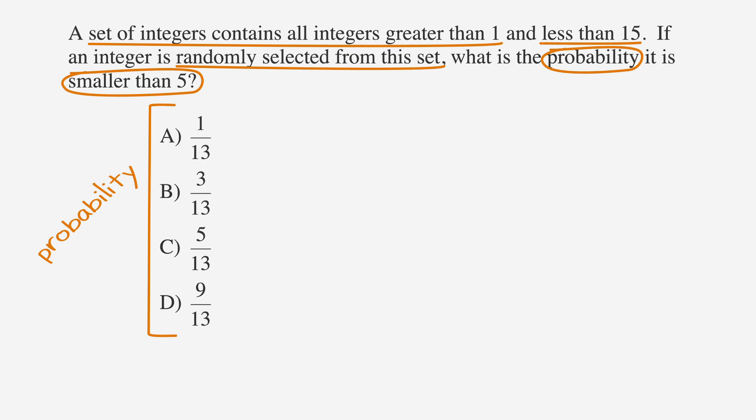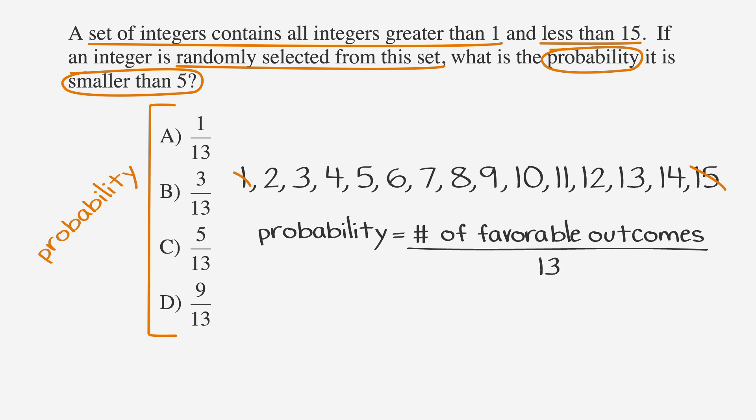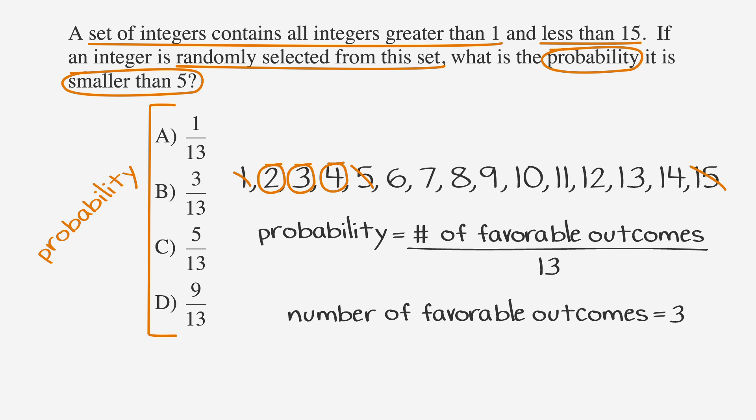The possible outcomes in this problem are the integers greater than 1 and less than 15, which means that 15 and 1 aren't options. We're left with 13 numbers to choose from. So our equation becomes probability equals number of favorable outcomes over 13. Now we need to find how many of these numbers will match the requirement that the number chosen is smaller than 5. 2, 3, and 4 work, but not 5 since we're looking for numbers less than 5. That's 3 favorable outcomes.